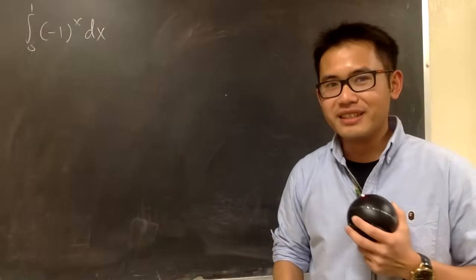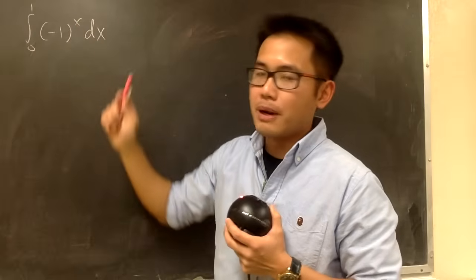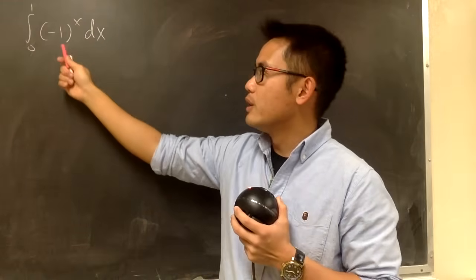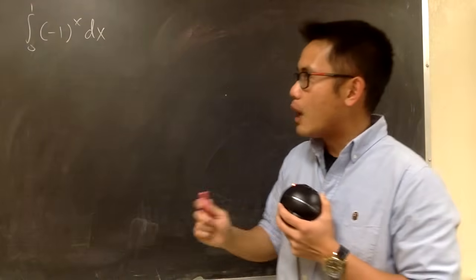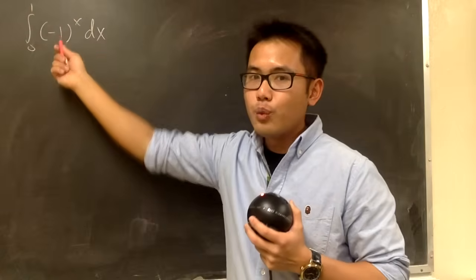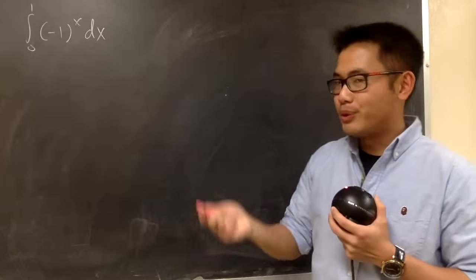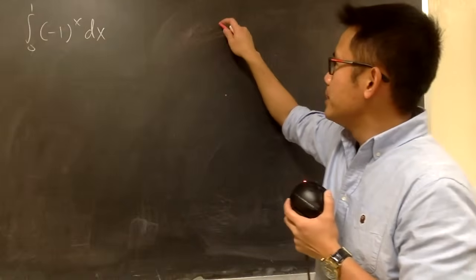Let me show you how to tackle this. First of all, when we have a number to the x power in the integral, we actually want to deal with base e rather than base negative 1. So the first step is, let's try to think about how we can rewrite negative 1 in terms of e to some power. And to do so, we can actually use the Euler's formula.